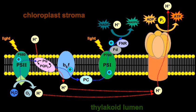In photosynthesis, the light-dependent reactions take place on the thylakoid membranes. The inside of the thylakoid membrane is called the lumen, and outside the thylakoid membrane is the stroma, where the light-independent reactions take place.